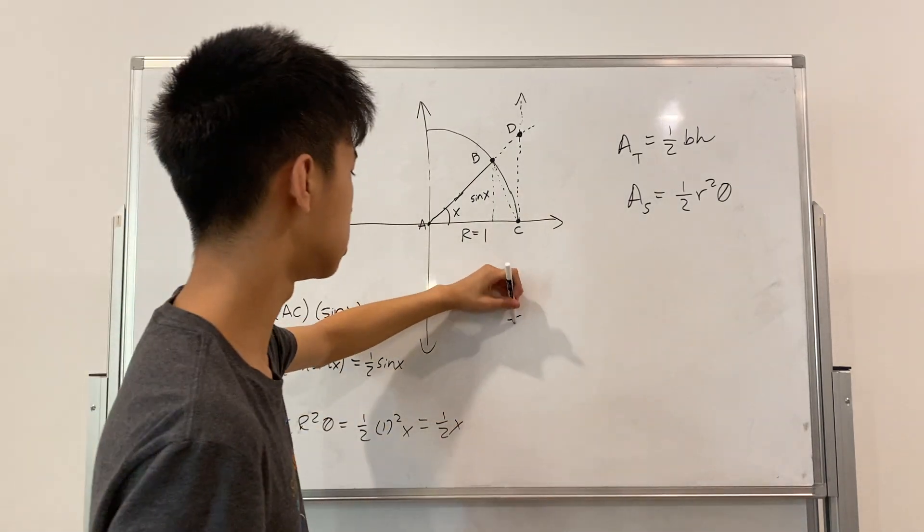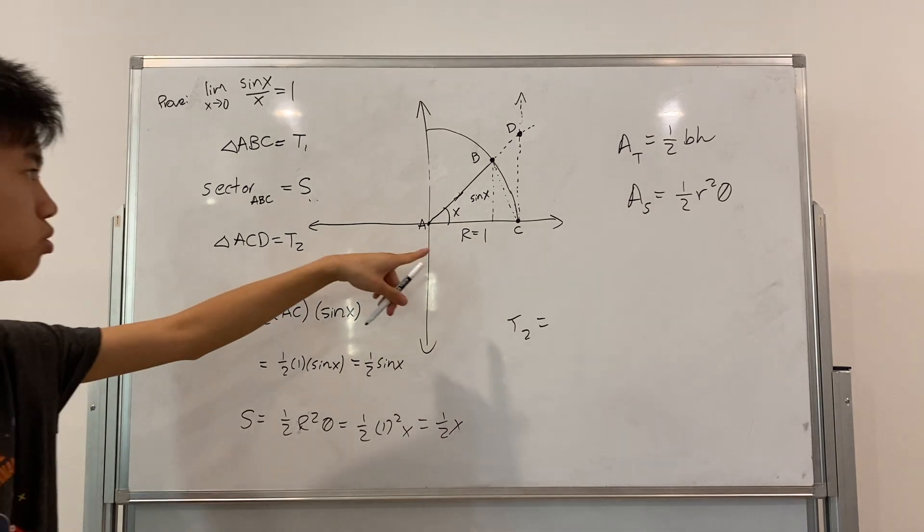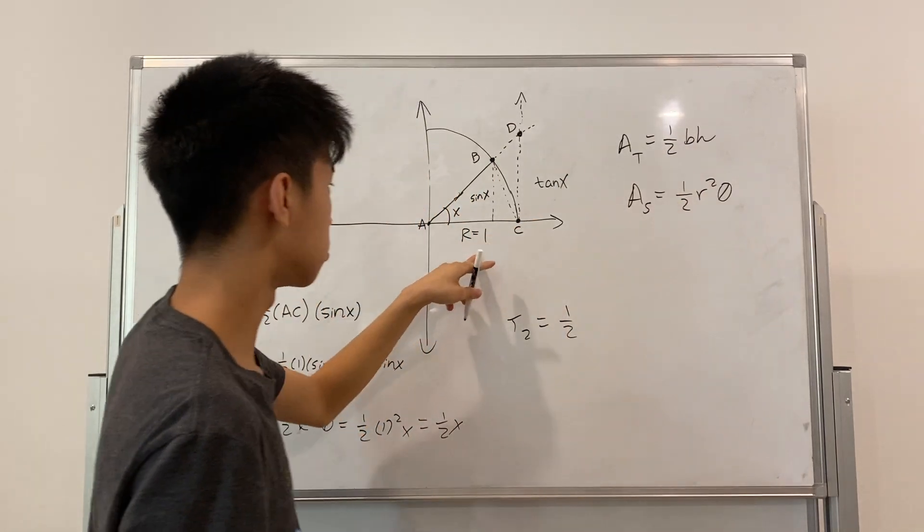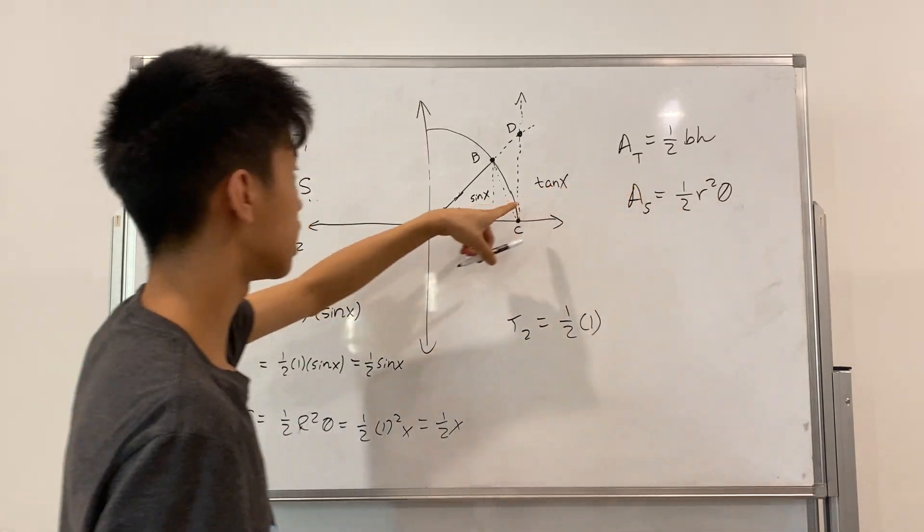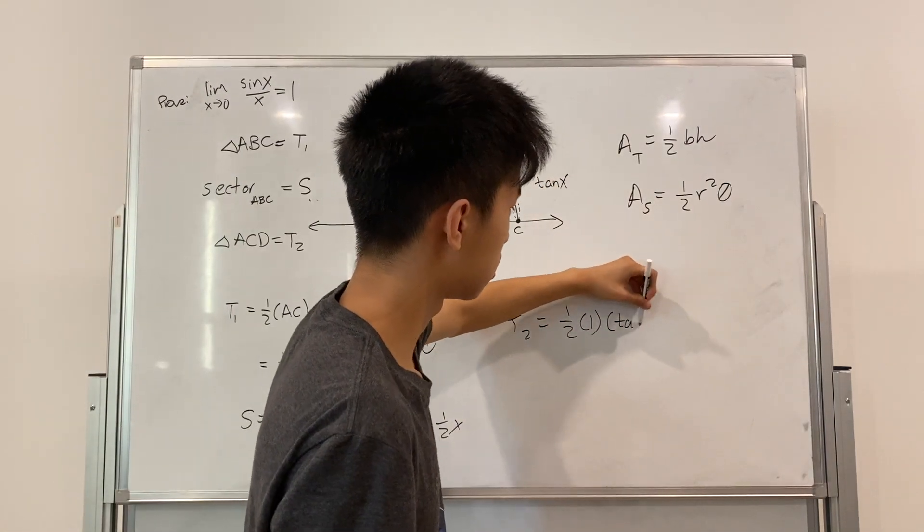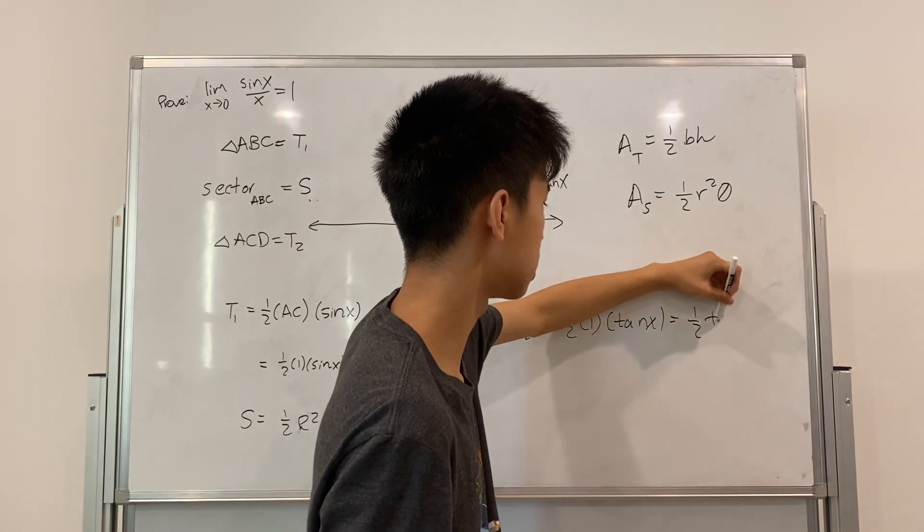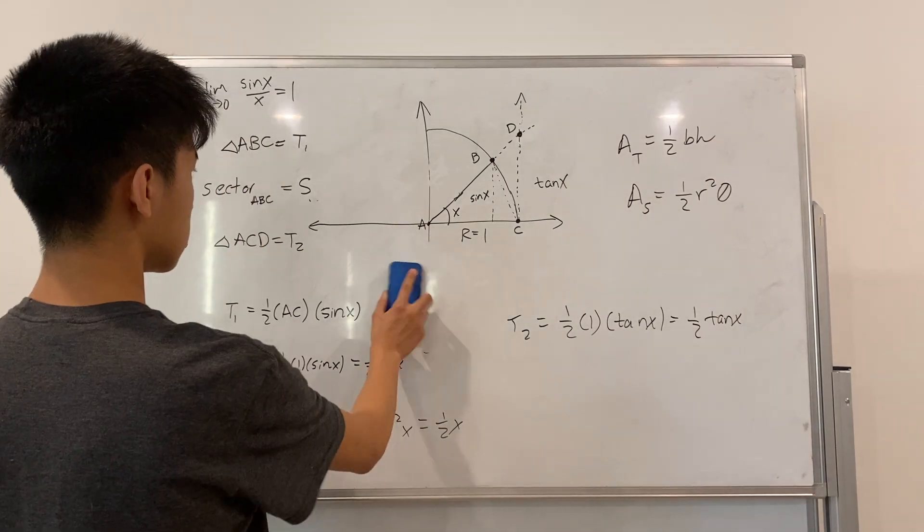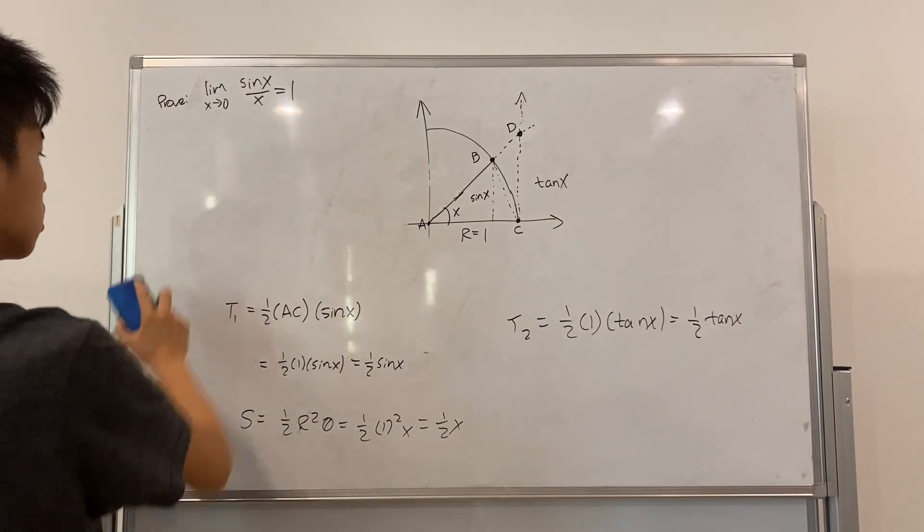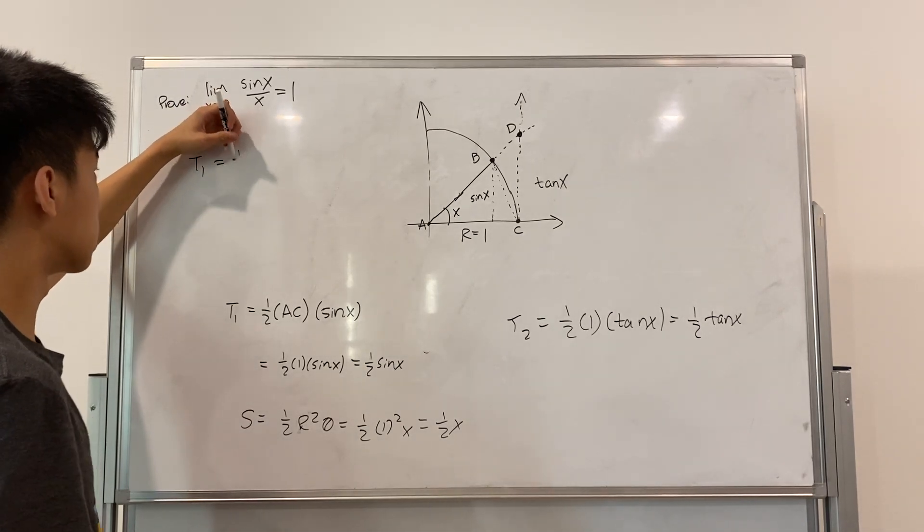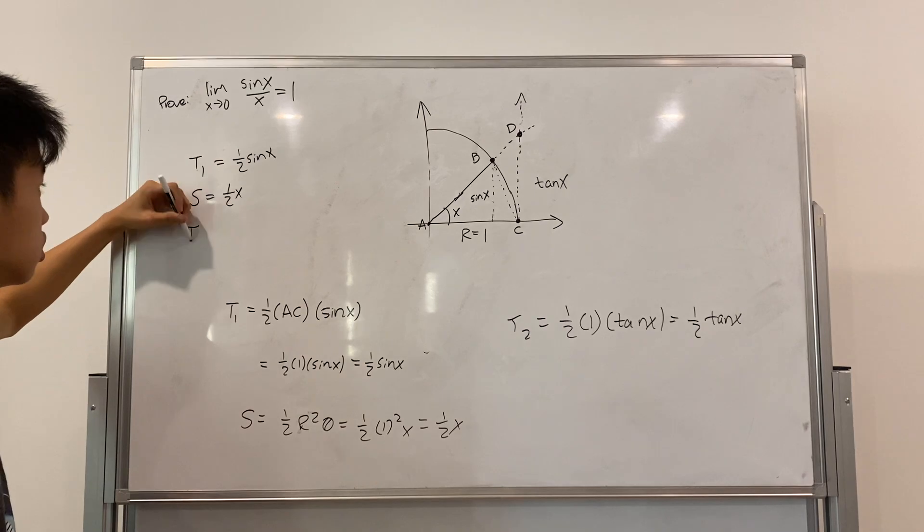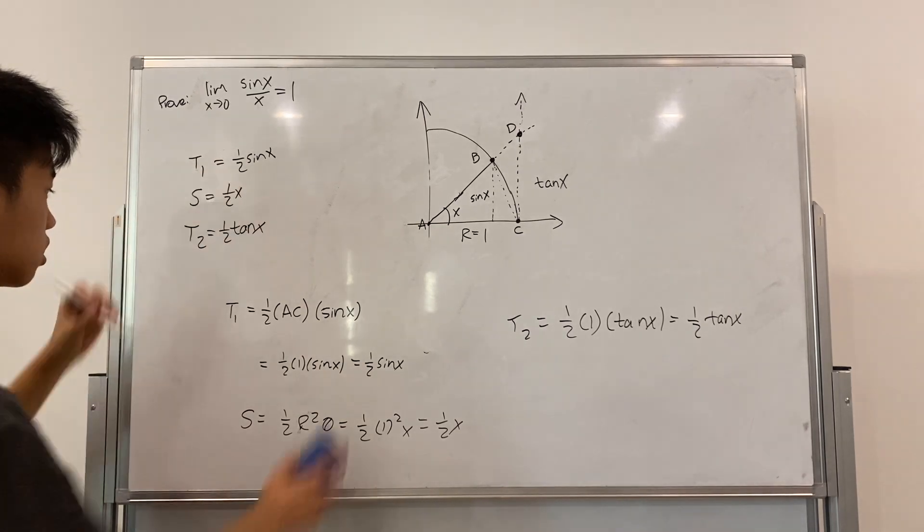And now we have T2. So, T2, we can look at this, still one half base times height. So base is still one. Now our height, if we just use more trig, we can find that the height is tangent of X. You can verify that on your own. So, T2 is one half tangent X. So, let me just erase most of this. I'll just erase everything but what's important. So, T1 is equal to one half sine of X. S is equal to one half X. T2 is equal to one half tangent of X.